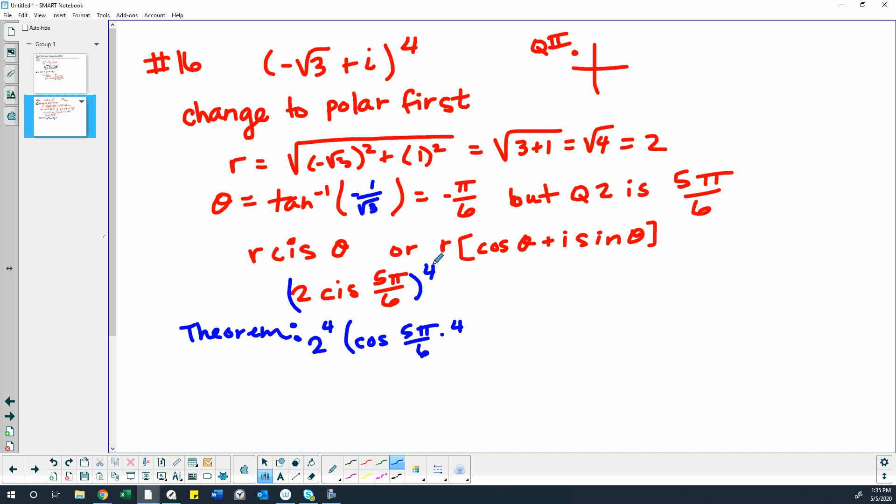Because we're multiplying by that power. So it's 2 to that fourth power, but then we're multiplying the angles by the fourth power.